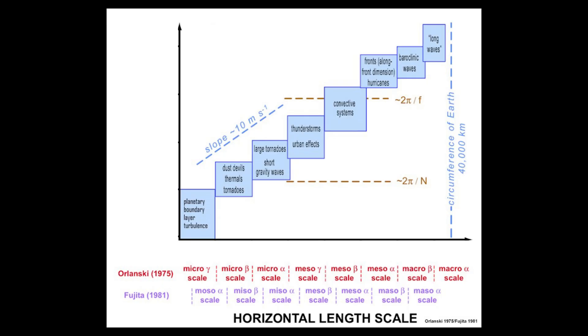In the Comet Applied NWP course lesson on resolvability, the Orlansky diagram is used to help define what is resolvable, given the horizontal length scale. This also ties into what features a model can resolve given its horizontal grid spacing.